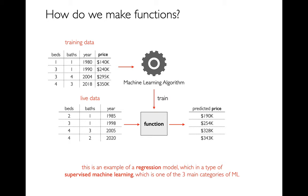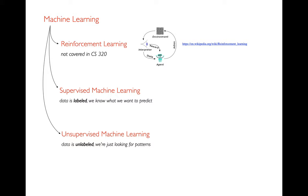The example I've given here is an example of a regression model. A regression model is more broadly a type of supervised machine learning, which is one of the main three categories of machine learning. I'm going to start broad and talk about these three areas, and then we're going to be talking about regression in more detail.